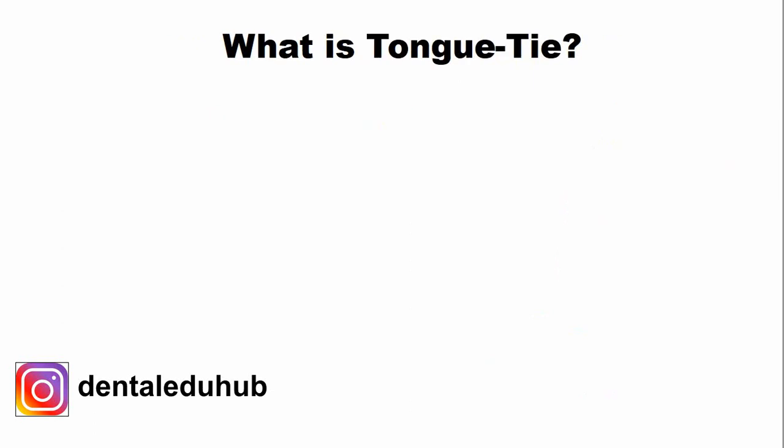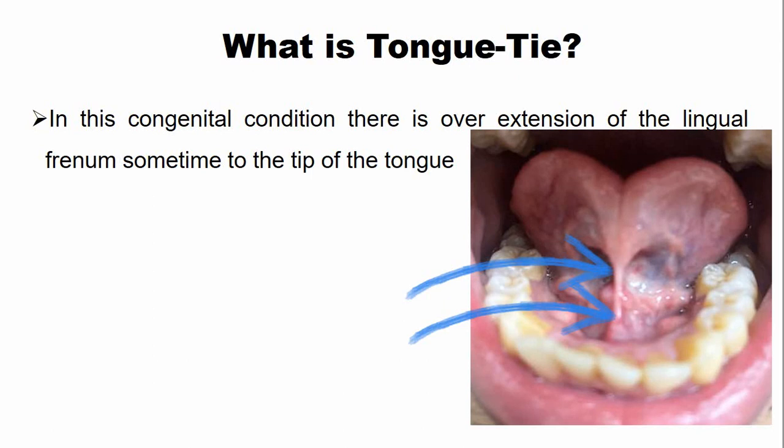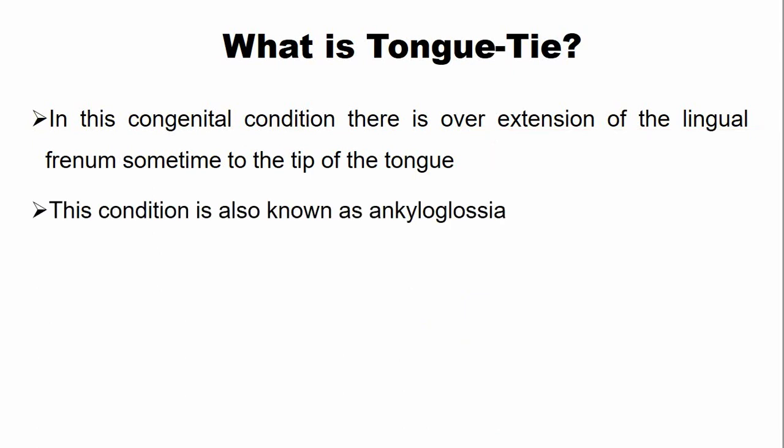So now, what is tongue tie? This is a congenital condition — it is present by birth — in which there is an overextension of the lingual frenulum, and it sometimes extends all the way to the tip of the tongue. There is another term used to describe this condition: ankyloglossia. Glossia means tongue, and ankylo refers to the tongue being attached to the floor of the mouth.